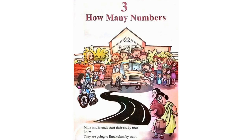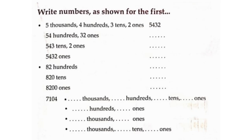Lesson 3. How many numbers? Write numbers as shown for the quest: 5 thousands, 4 hundreds, 3 tens, 2 ones — making 5,432.